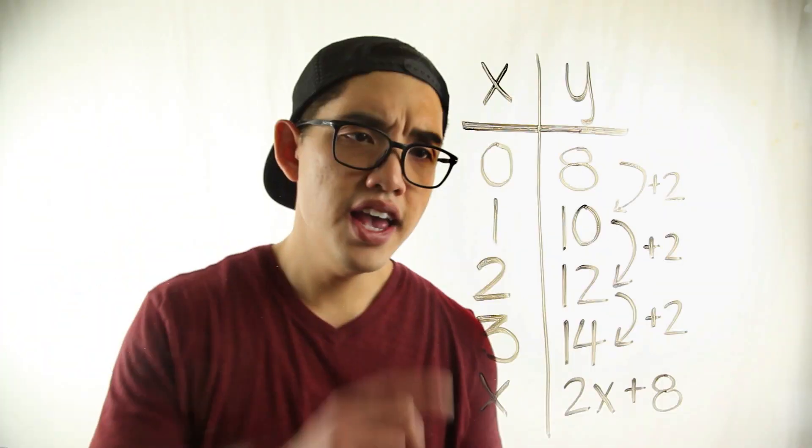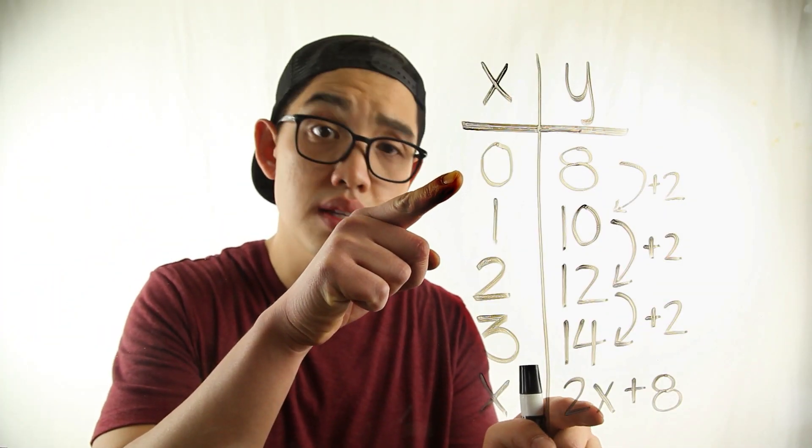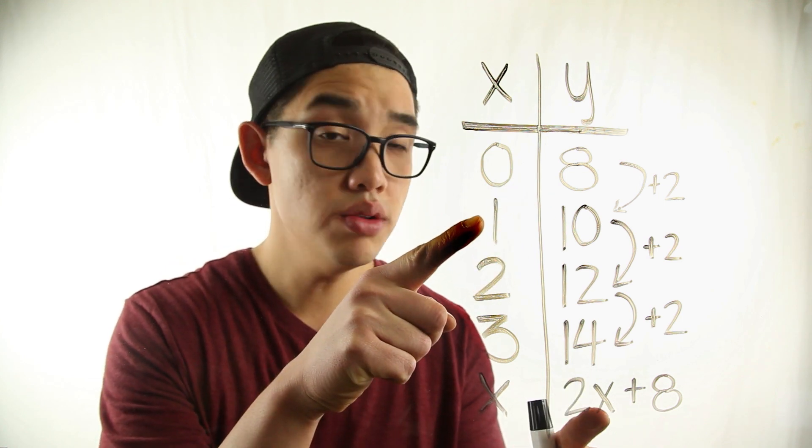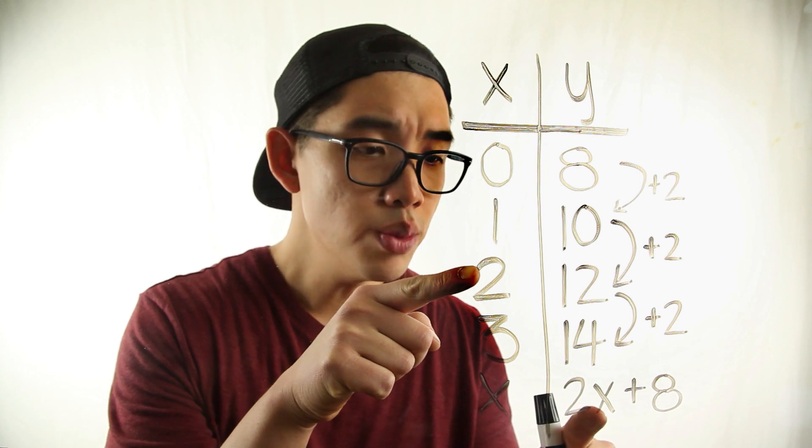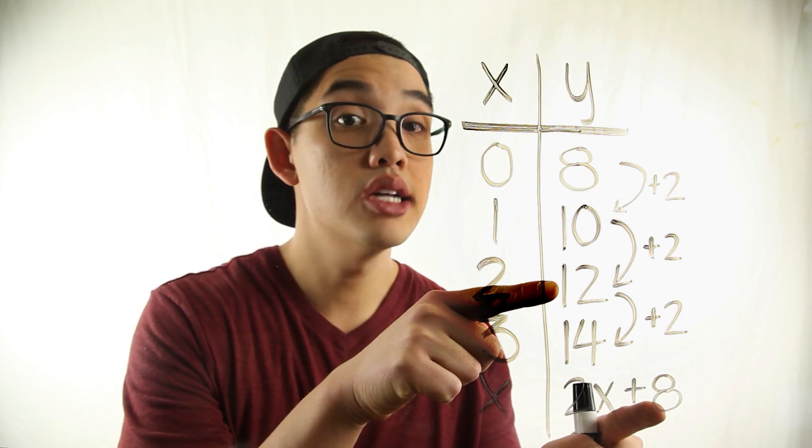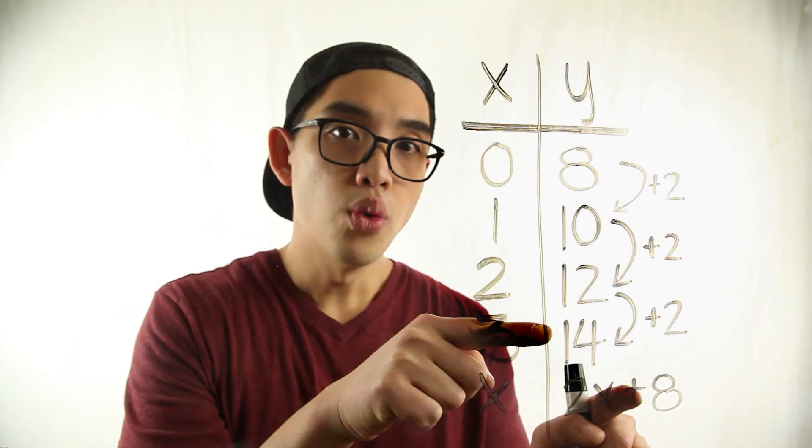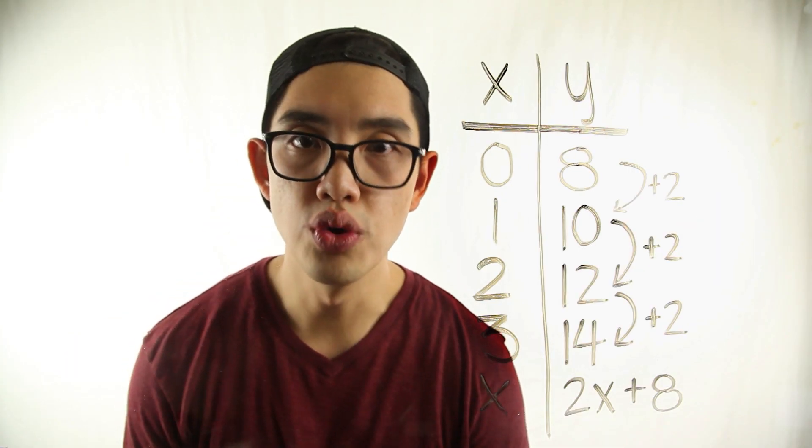Let's check our answer. If I plug in zero right here, two times zero that's zero plus another eight, that's eight. If I plug in one, one times two that's two plus another eight, that's ten. Two times two, that's four plus another eight, that's twelve. Plug in three, two times three is six plus eight, we get fourteen. Our function rule works.